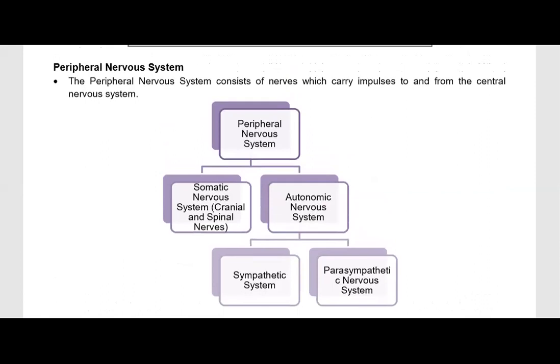That is the peripheral nervous system. The peripheral nervous system consists of nerves which carry impulses to and from the central nervous system. Basically, the peripheral nervous system means the somatic nervous system and the autonomic nervous system.